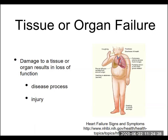If you damage the tissue or the organ, you often result in a loss of function, and you end up with a disease situation or harm to the body where it's not working properly. This could be the result of a disease process — Parkinson's is an example. You have cells within the substantia nigra in the brain stem; as those nerve cells die, they stop producing dopamine, and you see dramatic effects altering behavior and movement.